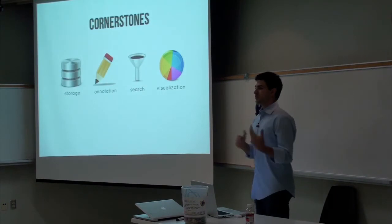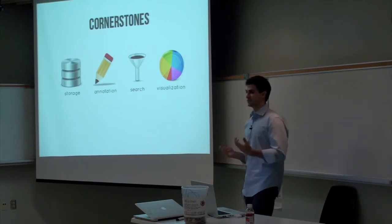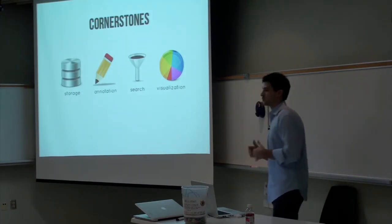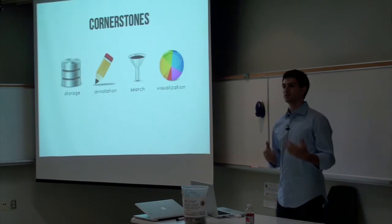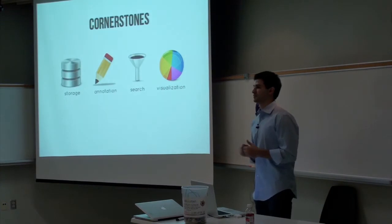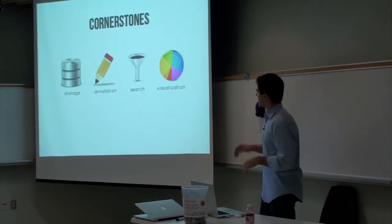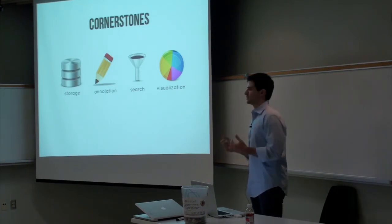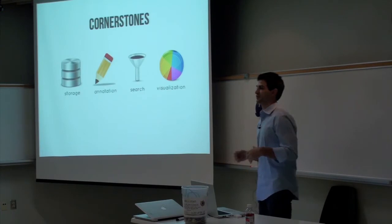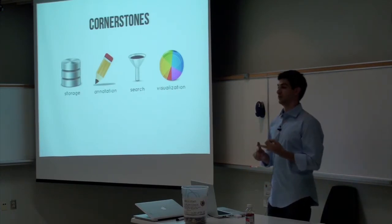We interviewed people doing research in this area and identified four functional cornerstones we really wanted to get right within the system. The first is the storage of variants — how are we going to store millions and millions of variants as they're generated almost daily? We designed a system that leverages the commonality within genetic variant data sets, achieving a compression ratio of 10 to 15 times, so we can store terabytes of information in gigabytes.